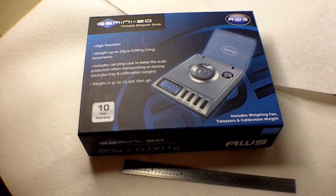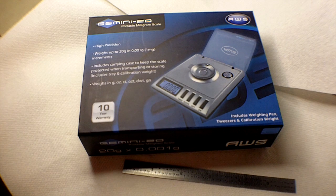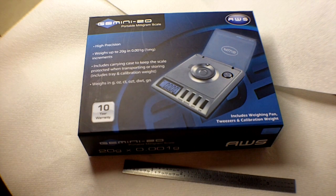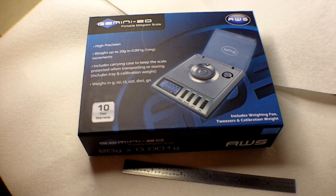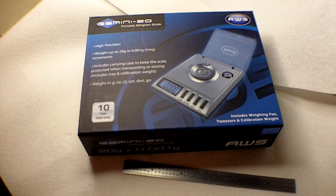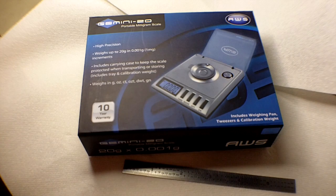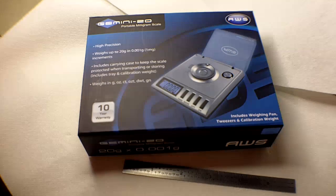Hi, this is Eric with a quick review of the Gemini 20 AWS gram weight scale. It weighs up to 20 grams in 0.001 gram (one milligram) increments and will also weigh in ounces, carats, troy ounces, pennyweight, or grains, which is what we're going to be using it for here to measure pellet weights.